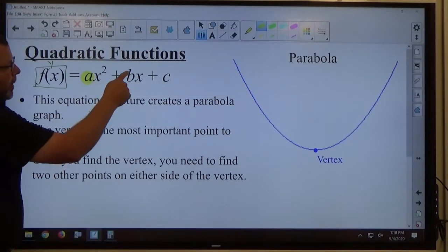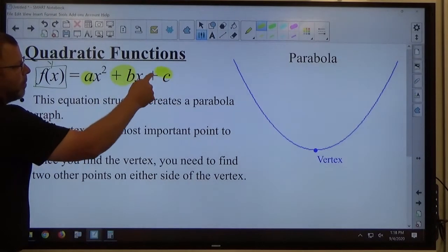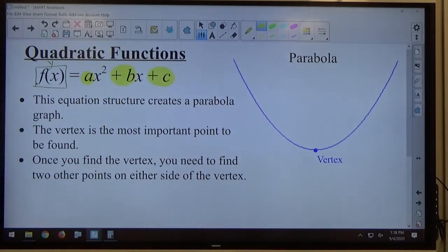y equals ax squared plus bx plus c. Now this is an abstract structure for a quadratic equation. The a and the b and the c represent numerical values that would create an equation containing x to the second power as the highest power.